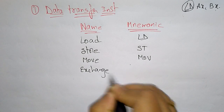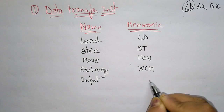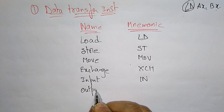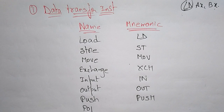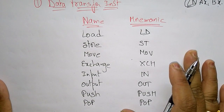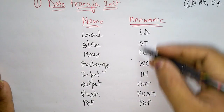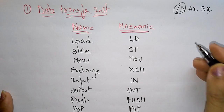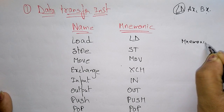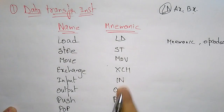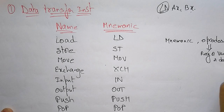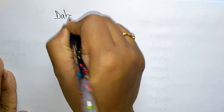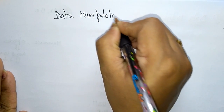Other data transfer instructions include Exchange with mnemonic XCH, Input with mnemonic IN, Output with mnemonic OUT, Push with mnemonic PUSH, and Pop with mnemonic POP. Assembly language instructions consist of a mnemonic and opcodes, where opcodes refer to registers, data registers, variables, or direct data.